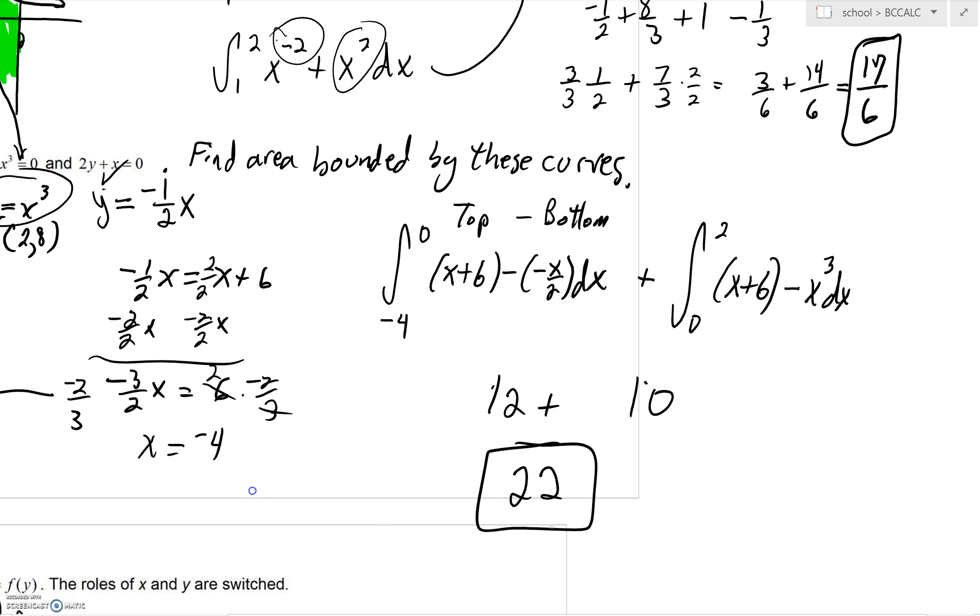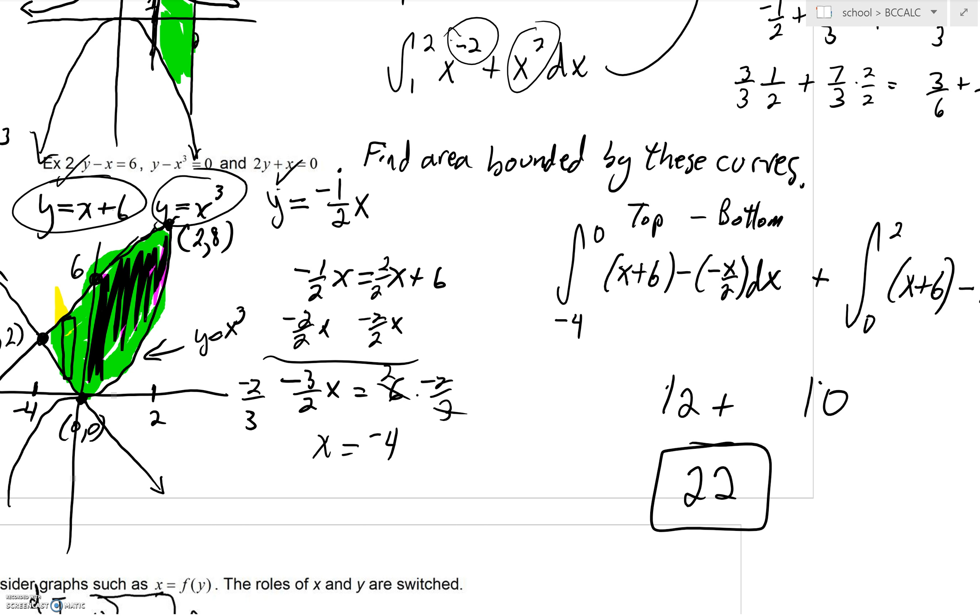Most importantly, because that bottom boundary changed and it changed at x equals zero. Here the bottom boundary is y equals x cubed. In the second quadrant, it's that line. We had to make a change. I'm going to stop the video here.